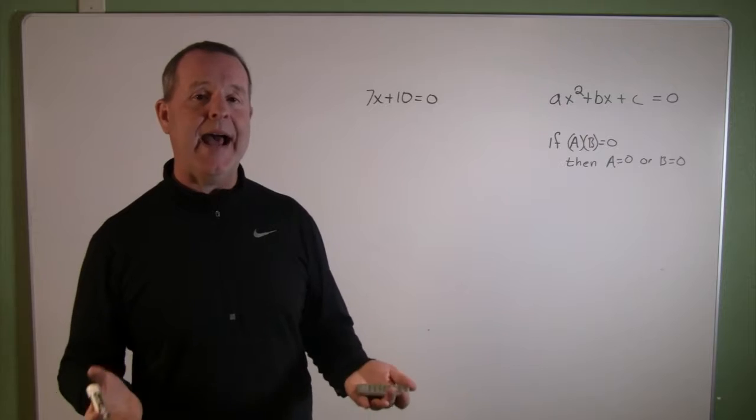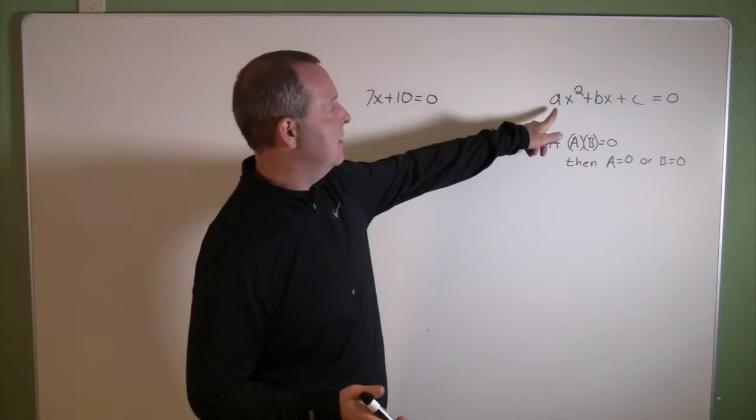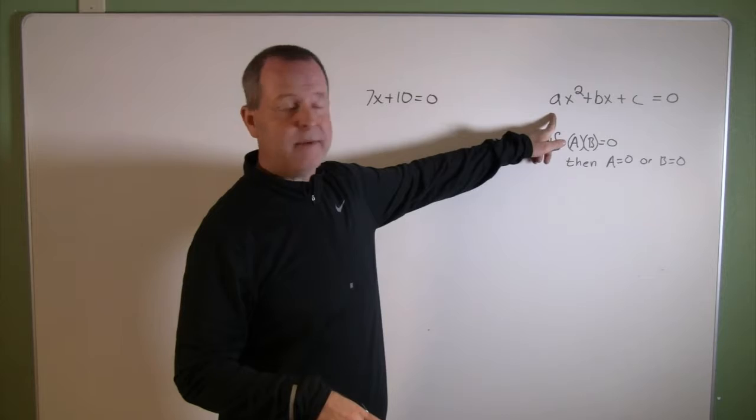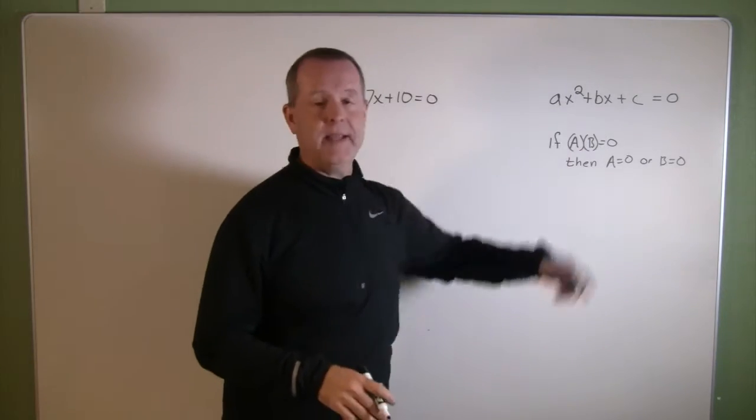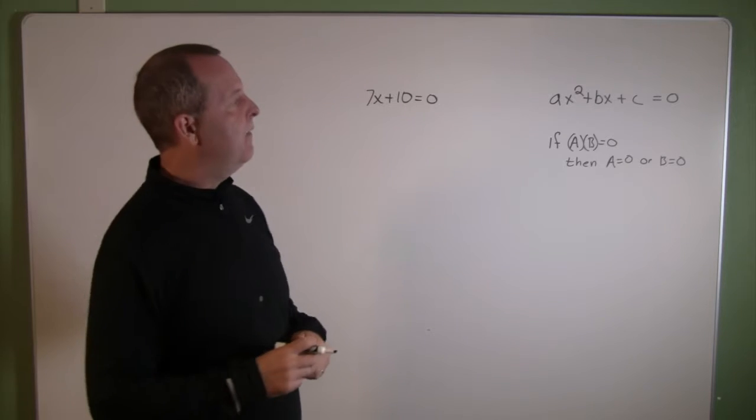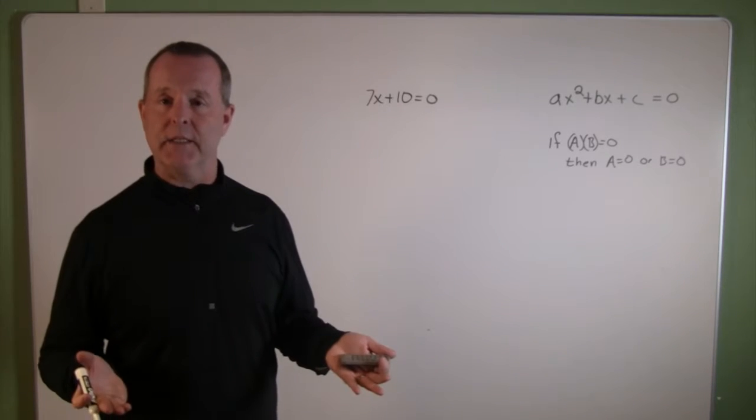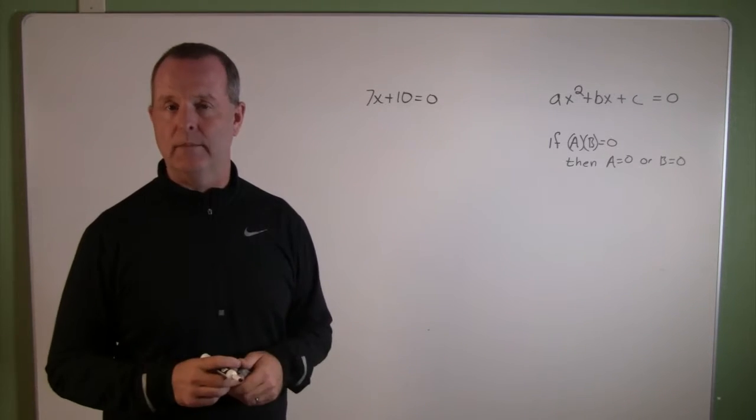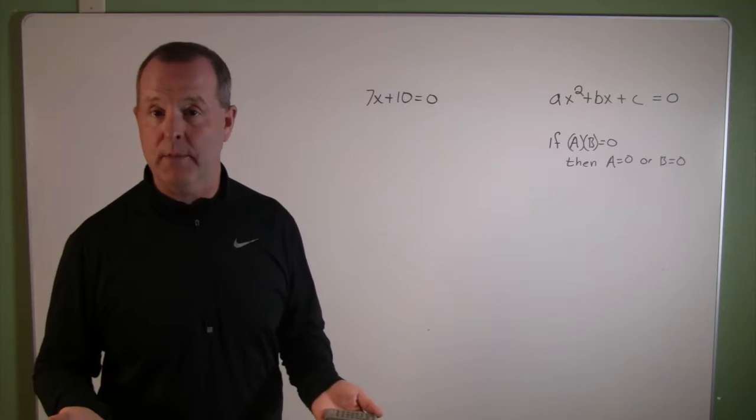And a quadratic in a standard form is basically an equation that looks like one of the trinomials that we've had before, ax squared plus bx plus c, and we set it equal to zero. And there we see a quadratic equation in standard form. Sometimes we also call them a second degree polynomial.